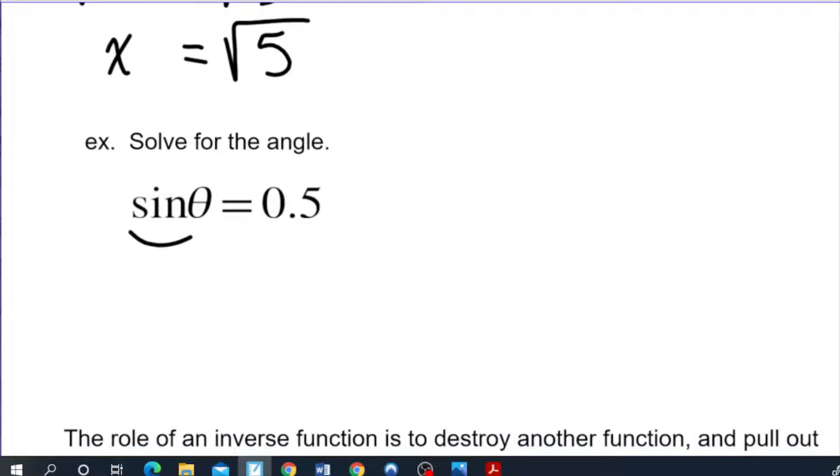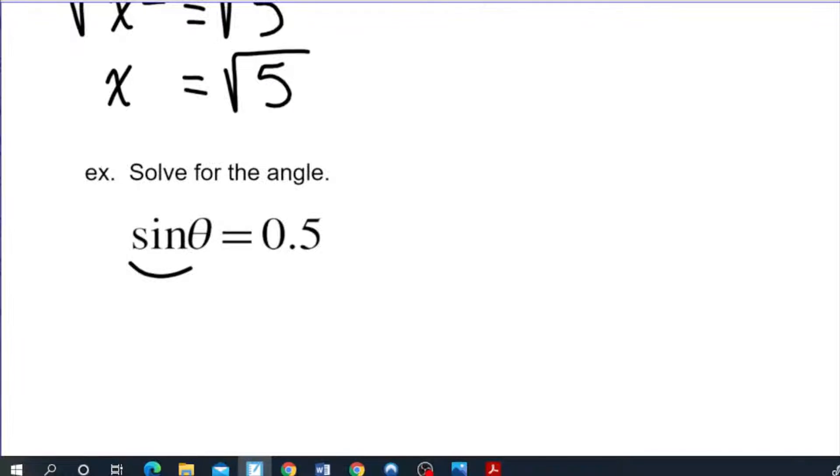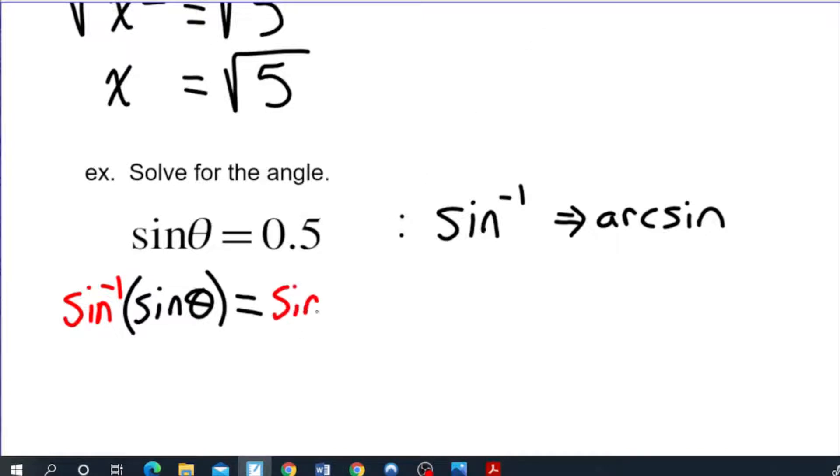We need something that will destroy that sine and you should have learned that there is a symbol on your calculator which is an inverse function. This is the symbol here. It is actually called the arc sine. So we are going to arc sine both sides of this equation. Once again I'm going to show the long process of doing this. So you would arc sine this side and again the arc sine is enveloping the sin theta and you are going to arc sine this side as well to keep the equation balanced.